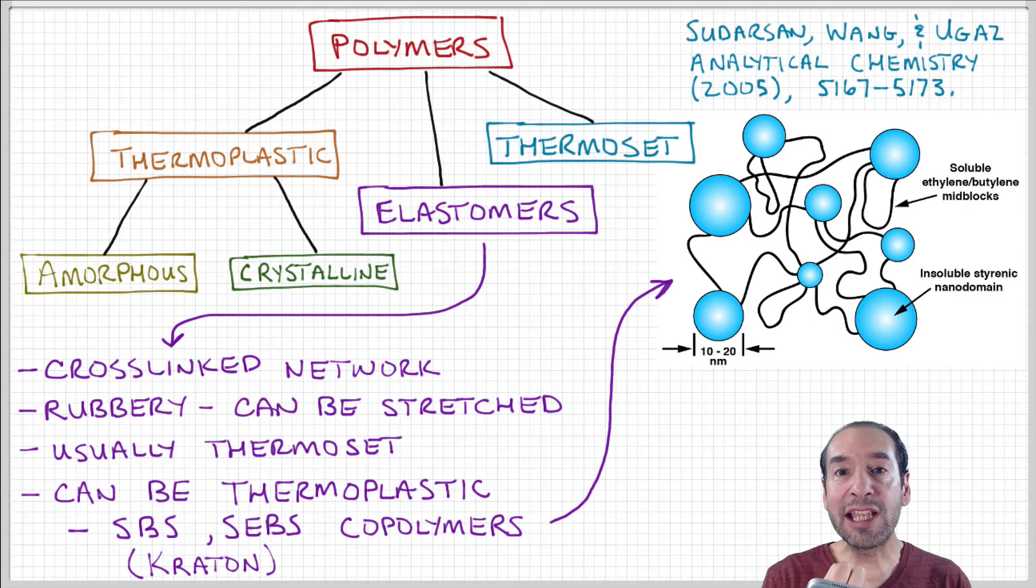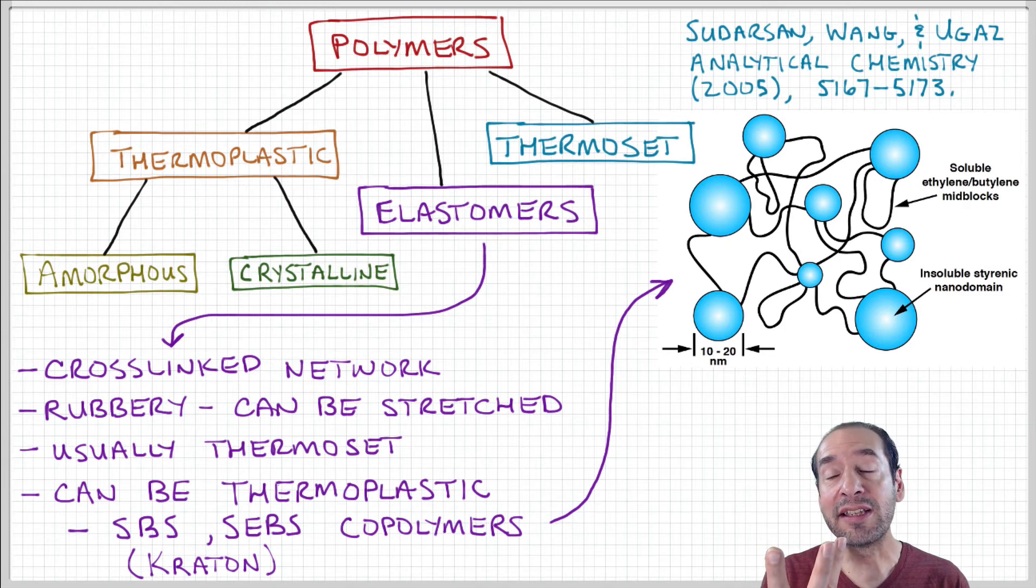So in that kind of environment then the styrene domains kind of want to cluster together. So you have styrene domains from neighboring chains that cluster together and effectively form junction points that behave like crosslinks but they're not permanent chemical bonds. So when you heat up the material it can flow and be molded just like a regular thermoplastic. So that kind of arrangement can be useful depending on the kind of application that you have in mind.